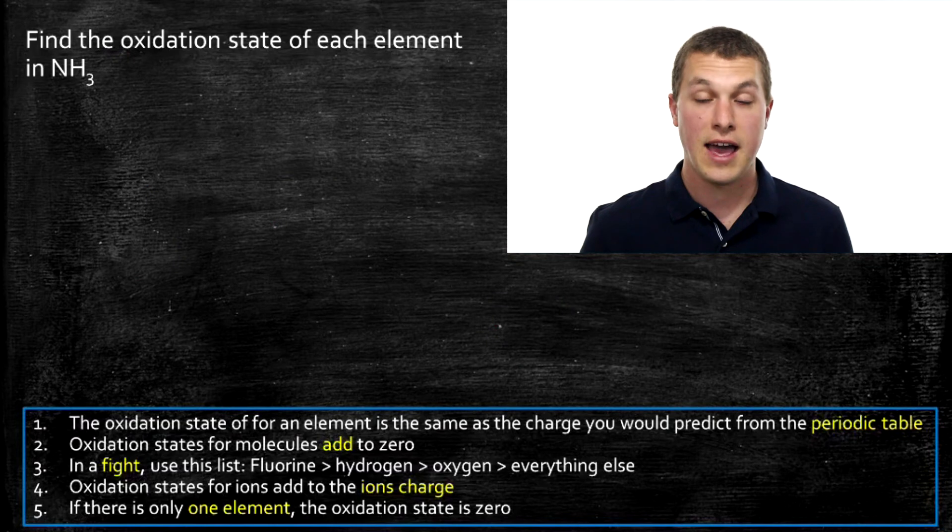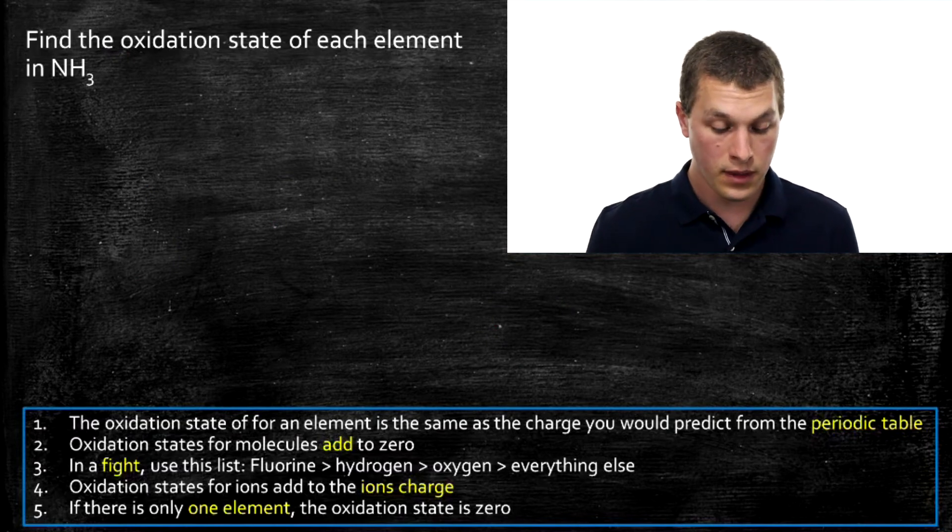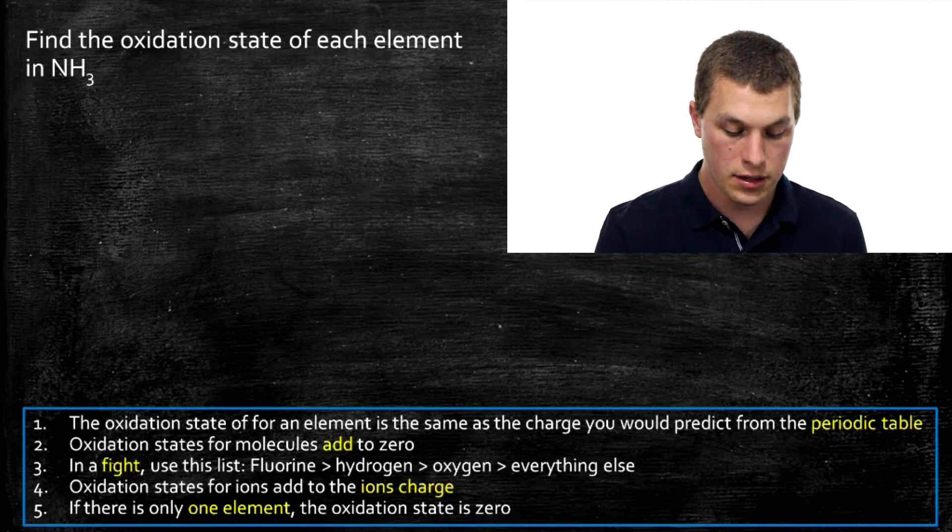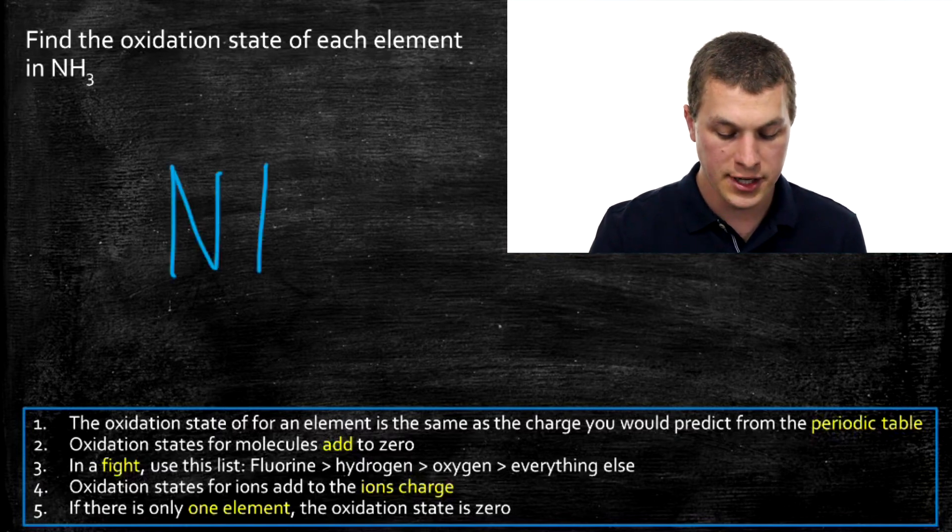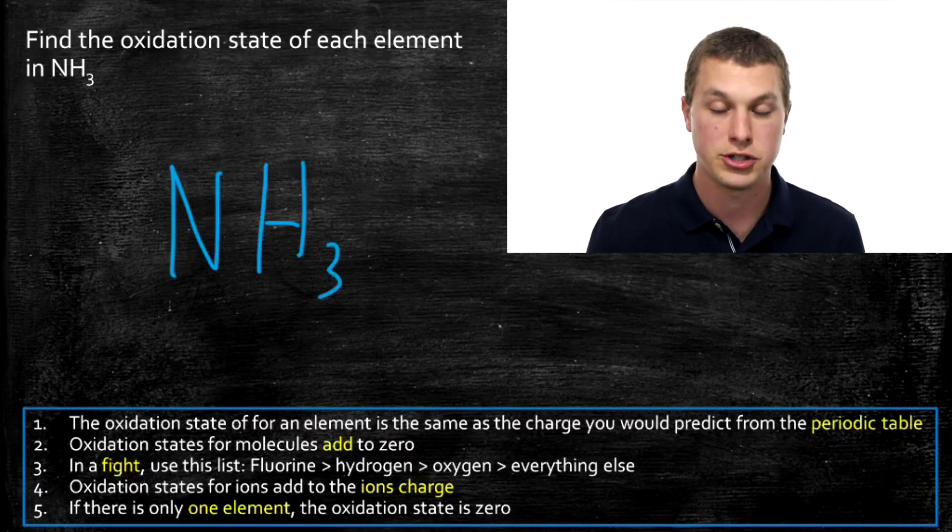In this case, I have NH3 or ammonia. Ammonia has two different elements in it, nitrogen and hydrogen. Using the periodic table, I can predict the charge of either of them. So how do I decide which one I start with?